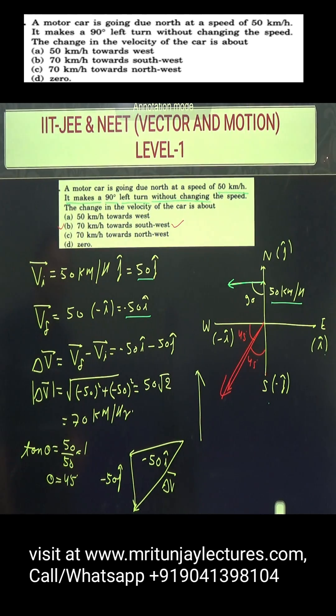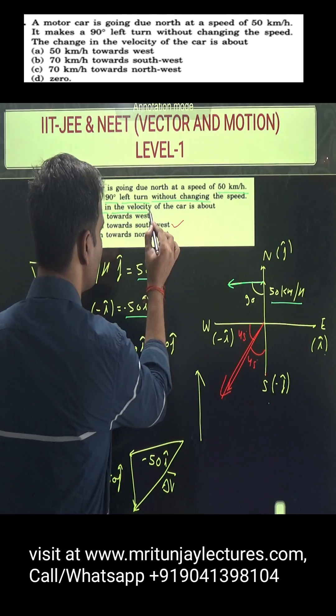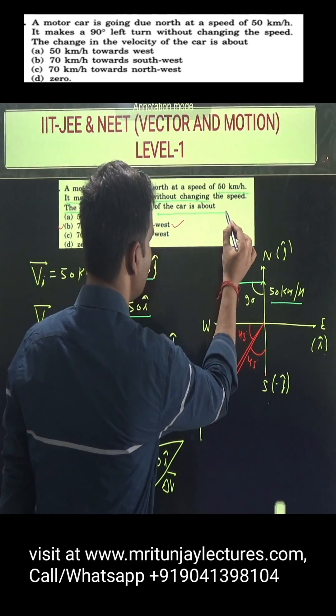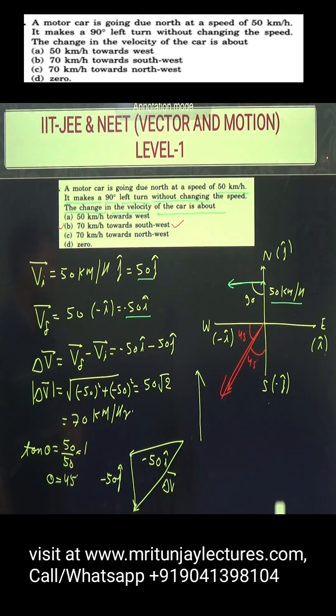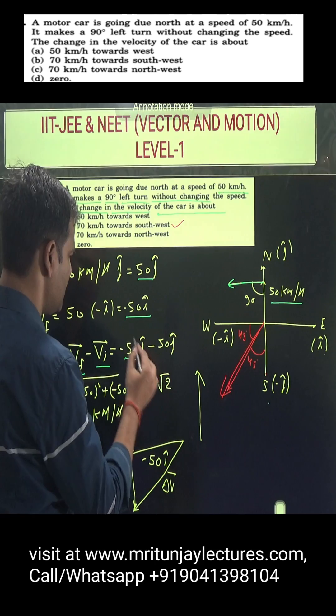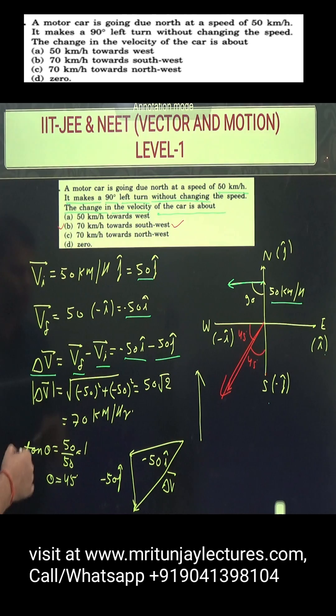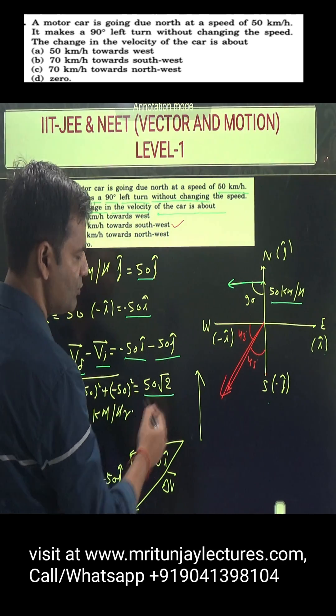The change in the velocity of the car, delta v, equals final minus initial. It is written as minus 50 i minus 50 j. The magnitude is 50 root 2, which is 70 kilometer per hour.